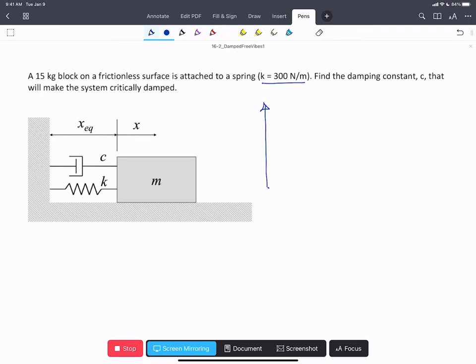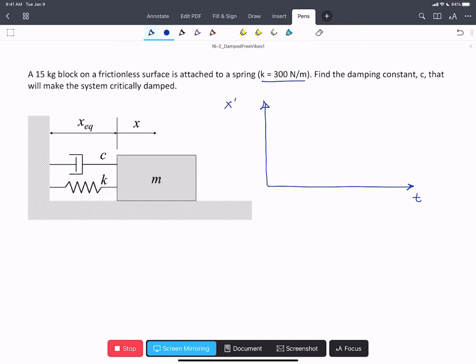Just as a reminder, critical damping means that the system will return to equilibrium as quickly as possible without oscillating. So its position will look something like this.